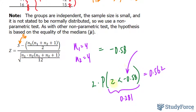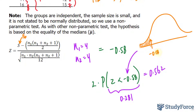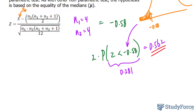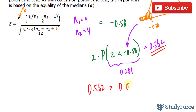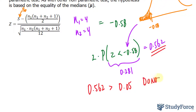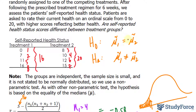Before we continue, this would look like the following on a Z-score chart, where negative 0.58 would be somewhere in the left tail. This value is what we compare to the 0.05 significance level. 0.562 is much bigger than 0.05, so because of this, we do not reject the null hypothesis. The null hypothesis was that the medians are equal, meaning the treatments weren't any different, technically speaking.